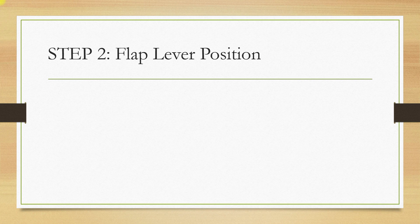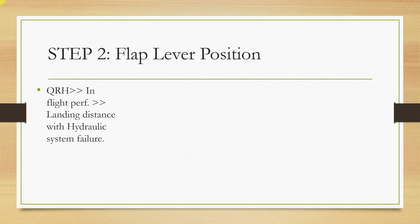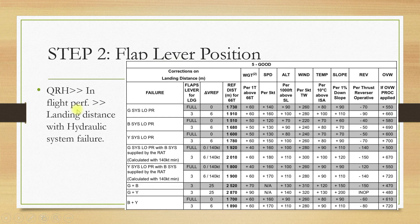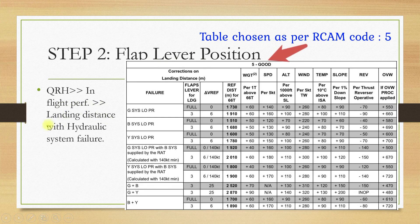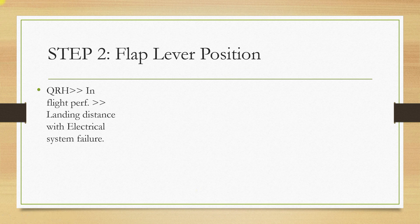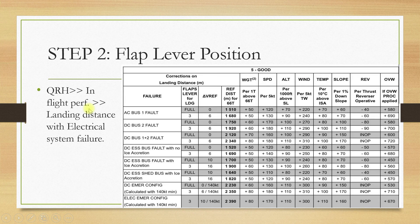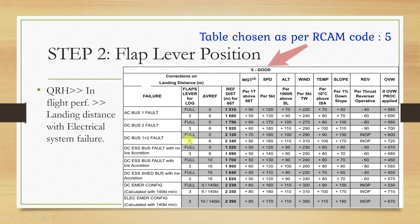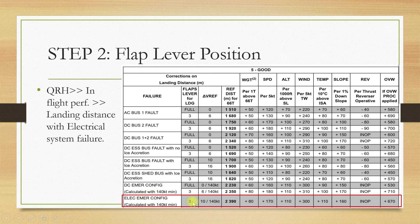Step 2 is determination of flap lever position. We are having multiple failures, so let us look at the different failures and what flap lever position is suggested. If you go to in-flight performance and landing distance with hydraulic system failure, you can see that for green plus yellow hydraulic failure the flap lever should be 3. For the other failure, go to landing distance with electrical system failure in the in-flight performance section. You'll find that for ELEC MR config, which is basically AC bus 1 plus 2 fault, flaps 3 is also suggested.